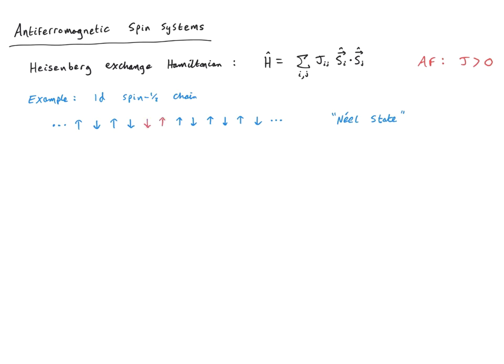That's because contained within the Heisenberg exchange Hamiltonian are spin-flip terms. These terms lower the s_z projection of a particular spin and raise the s_z projection of a neighbouring spin. The strict up-down-up-down order of the Néel state is disturbed by this spin-flip process. The true ground state will be a superposition of various states, including domains of anti-ferromagnetism separated by domain walls with two parallel spins. The ground state is not a pure product state with pristine anti-ferromagnetic ordering.